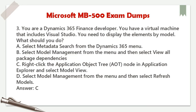Question 3. You are a Dynamics 365 Finance developer. You have a virtual machine that includes Visual Studio. You need to display the elements by model. What should you do? A. Select metadata search from the Dynamics 365 menu. B. Select model management from the menu and then select view all package dependencies. C. Right-click the application object tree (AOT) node in Application Explorer and select model view. D. Select model management from the menu and then select refresh models. Answer: C.